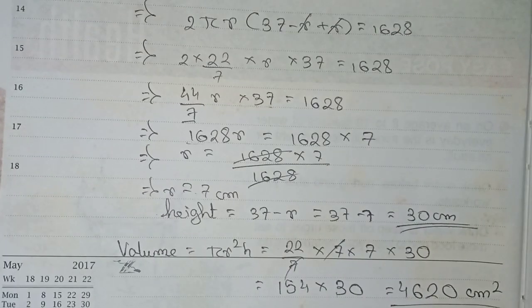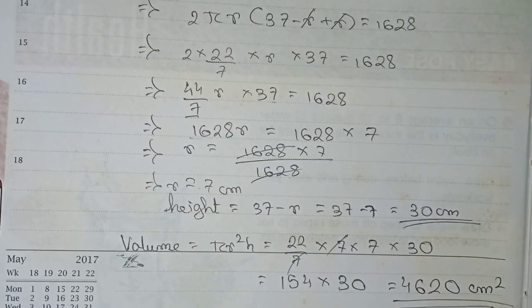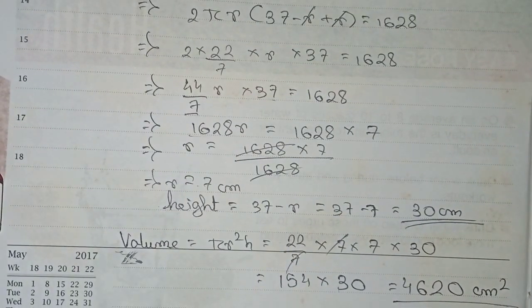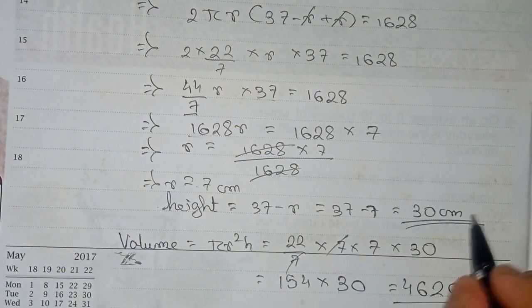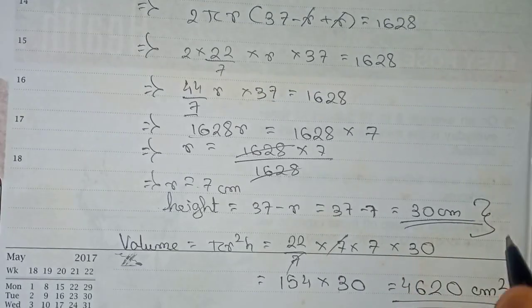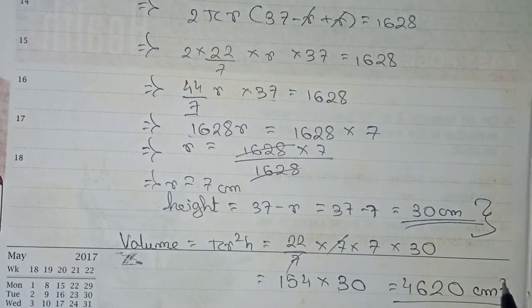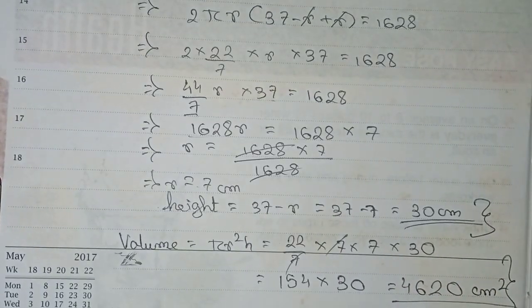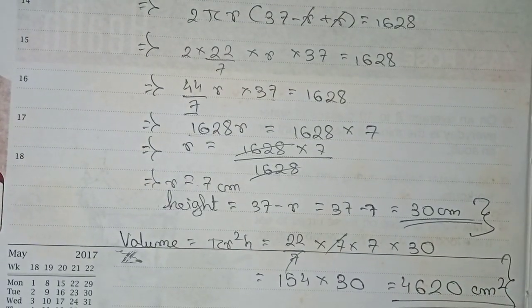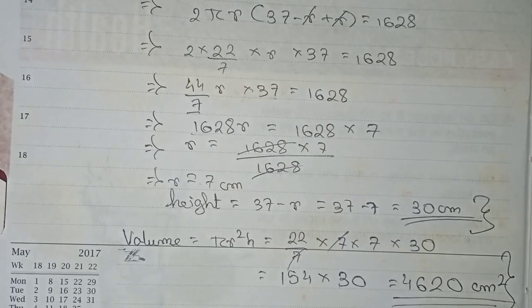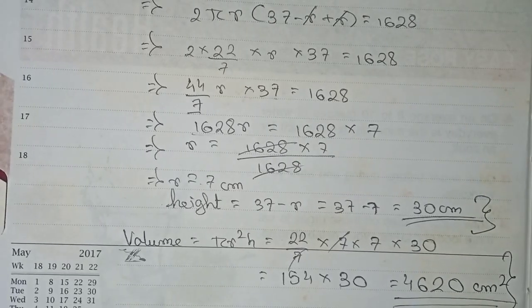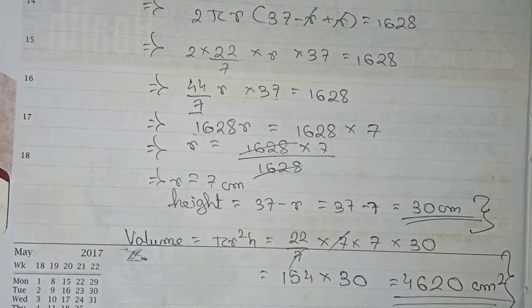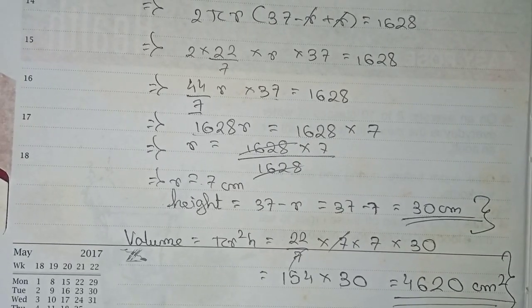So this is the final answer for this question. Our height is 30 centimeters and the volume is 4620 cubic centimeters. Thanks for watching this video — please subscribe to my channel for more solutions like this. Thank you.